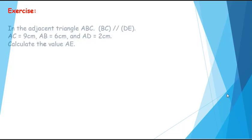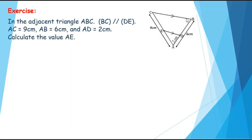Let us take this exercise. In the adjacent triangle ABC, we have BC is parallel to DE. AC equals 9 cm, AB equals 6 cm, and AD equals 2 cm. We want to calculate the value of AE.